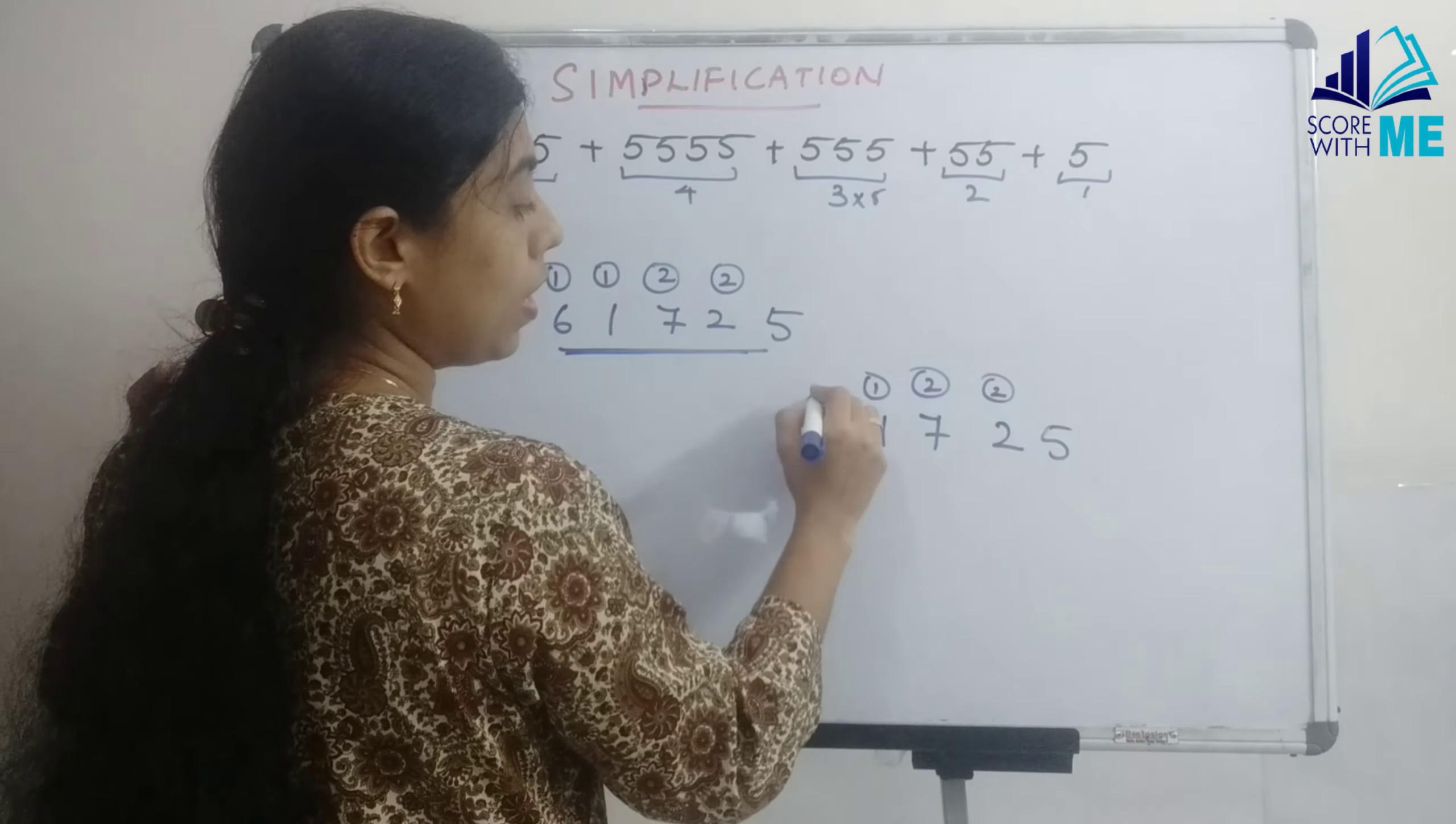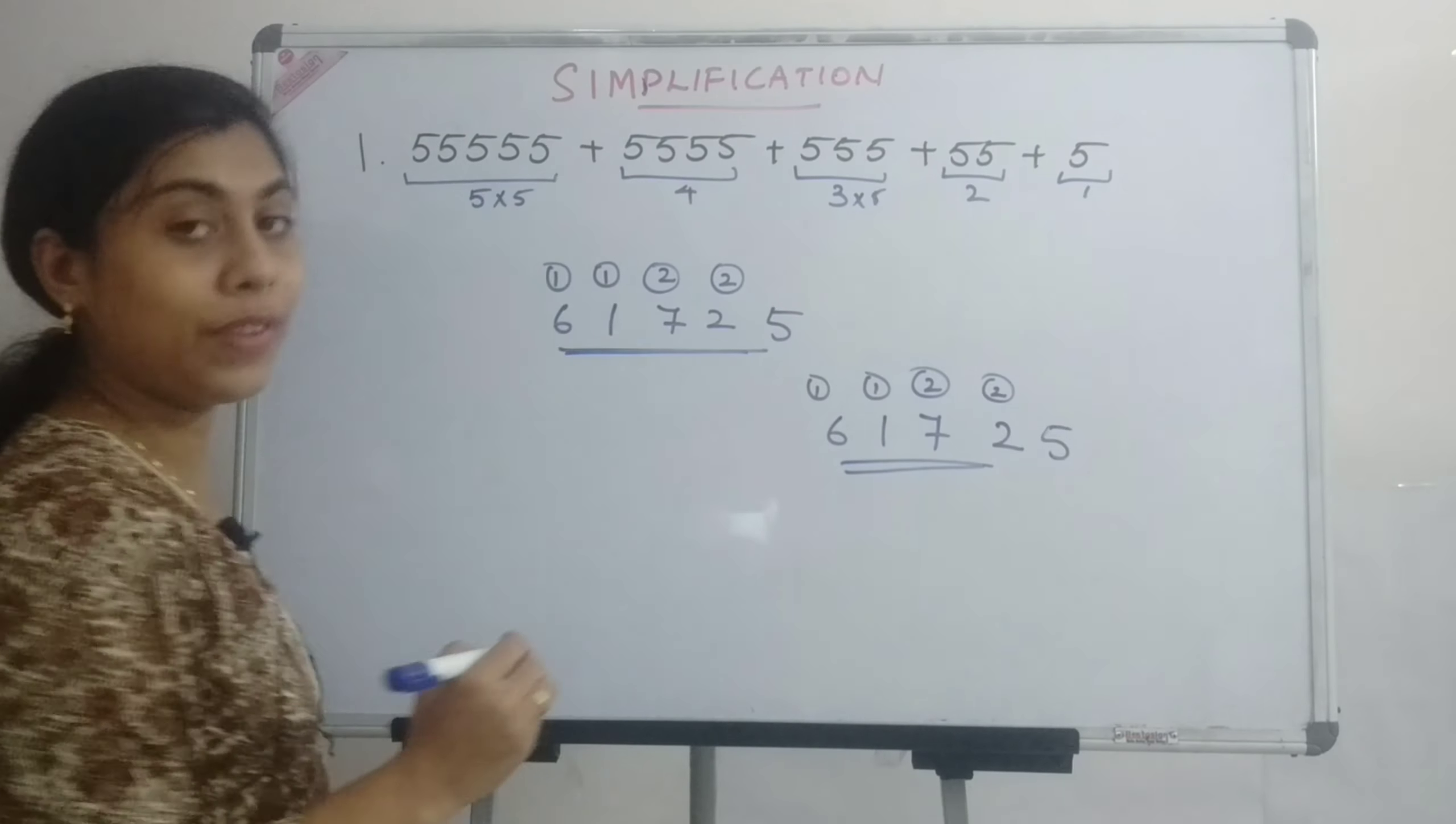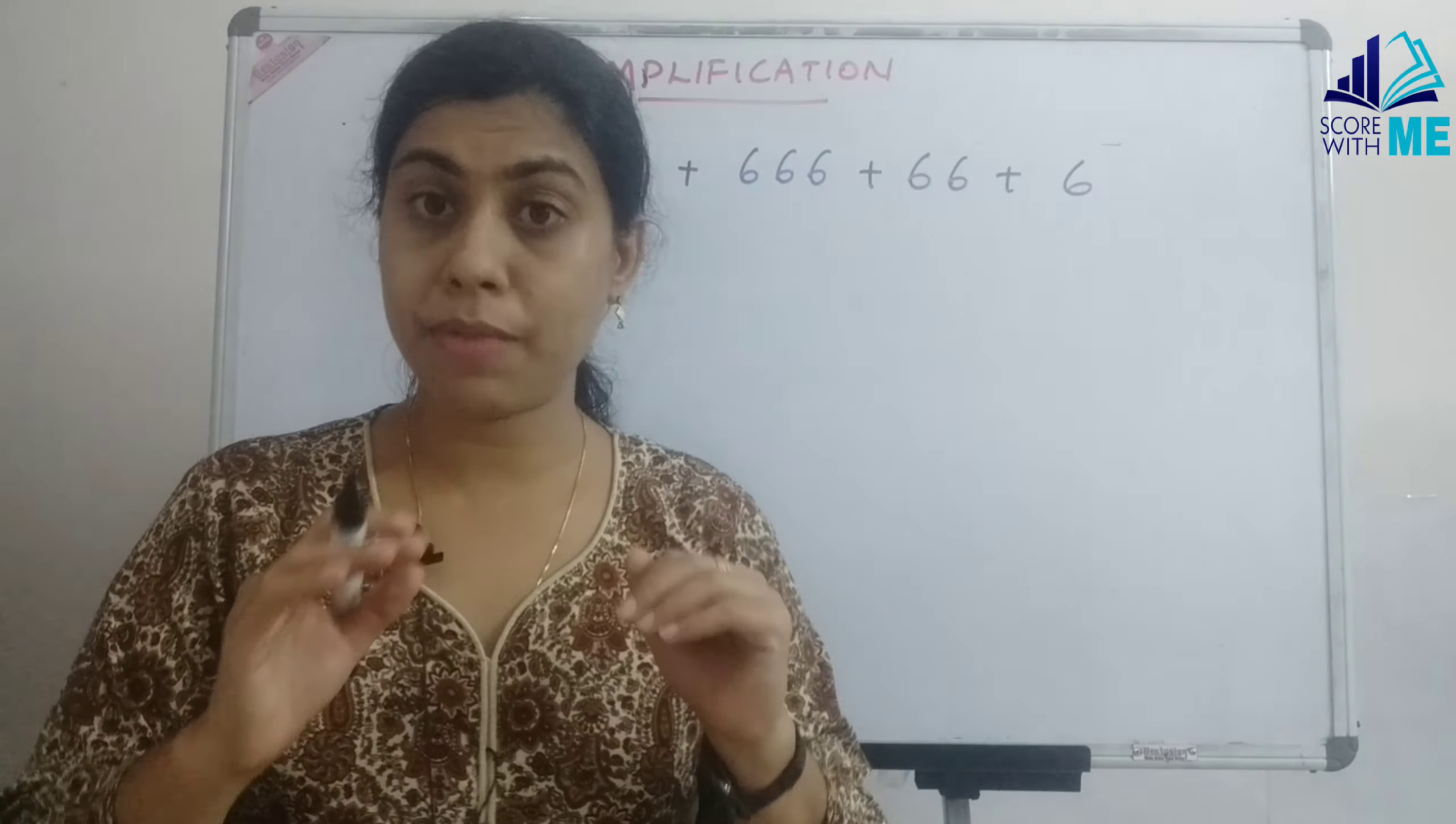5 times 2 is 10, carry 1, it becomes 11. 5 into 1 is 5, and the number is 61725. This is the answer for better understanding of the same trick.